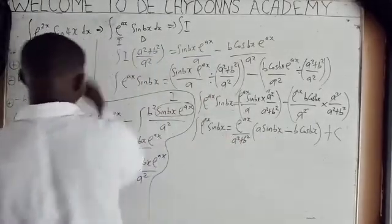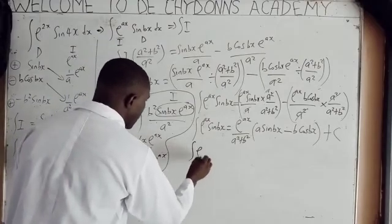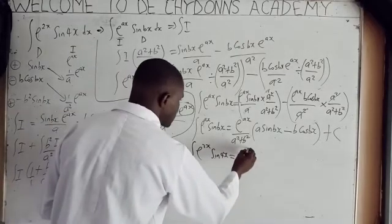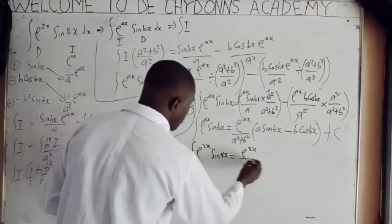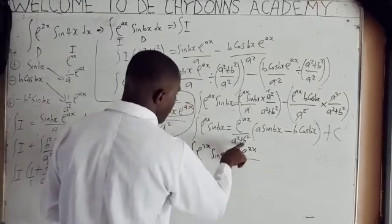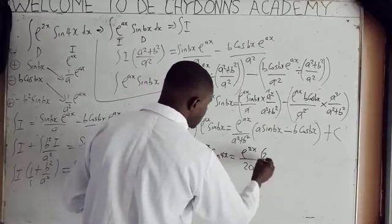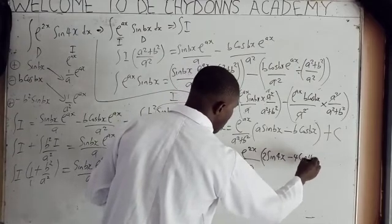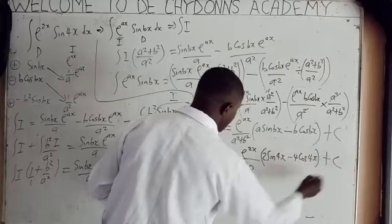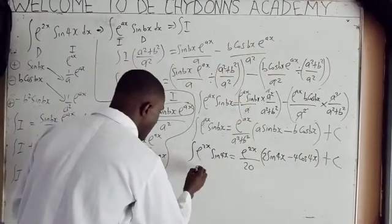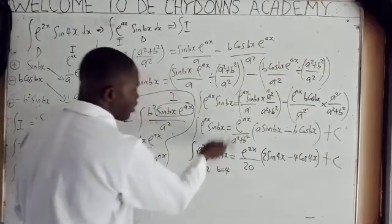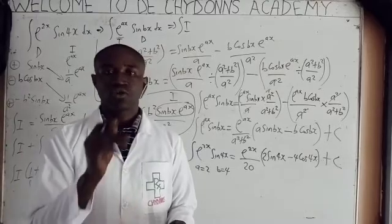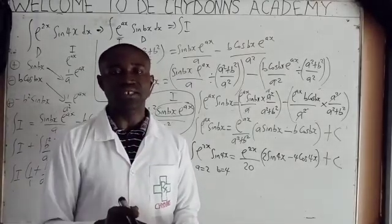So this is the formula we need to solve this question. When we integrate exponential 2x sine 4x, it is equivalent to exponential 2x, where a equals 2, over 2 squared plus 4 squared, that is 4 plus 16 equals 20, all times bracket 2 sine 4x minus 4 cosine 4x, plus C. Remember, a equals 2 and b equals 4 from comparison. Thanks for watching the video — please see the next part so you know how you can also integrate it. Thank you.